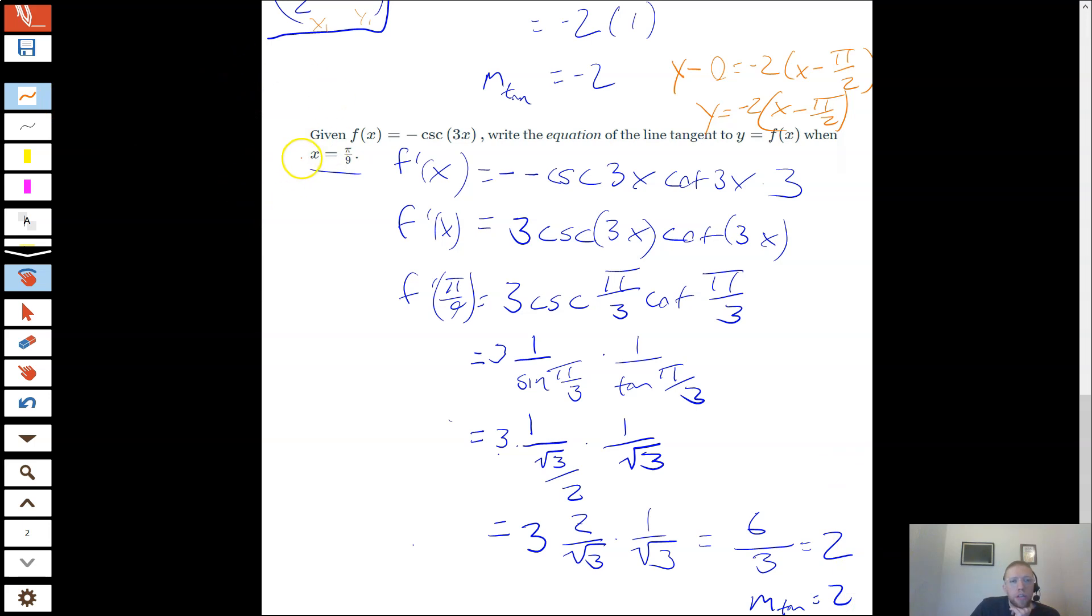And now I need a point to go with my slope. So I'll use π/9. My point is going to be π/9 comma f(π/9). So I need to plug it back in to get my y. And that will be π/9 comma negative cosecant of 3 times π/9. And really what that is is negative 1 over sin(π/3). And then from my unit circle, the sine of π/3 is √3/2. So this ends up being π/9, negative 2/√3.